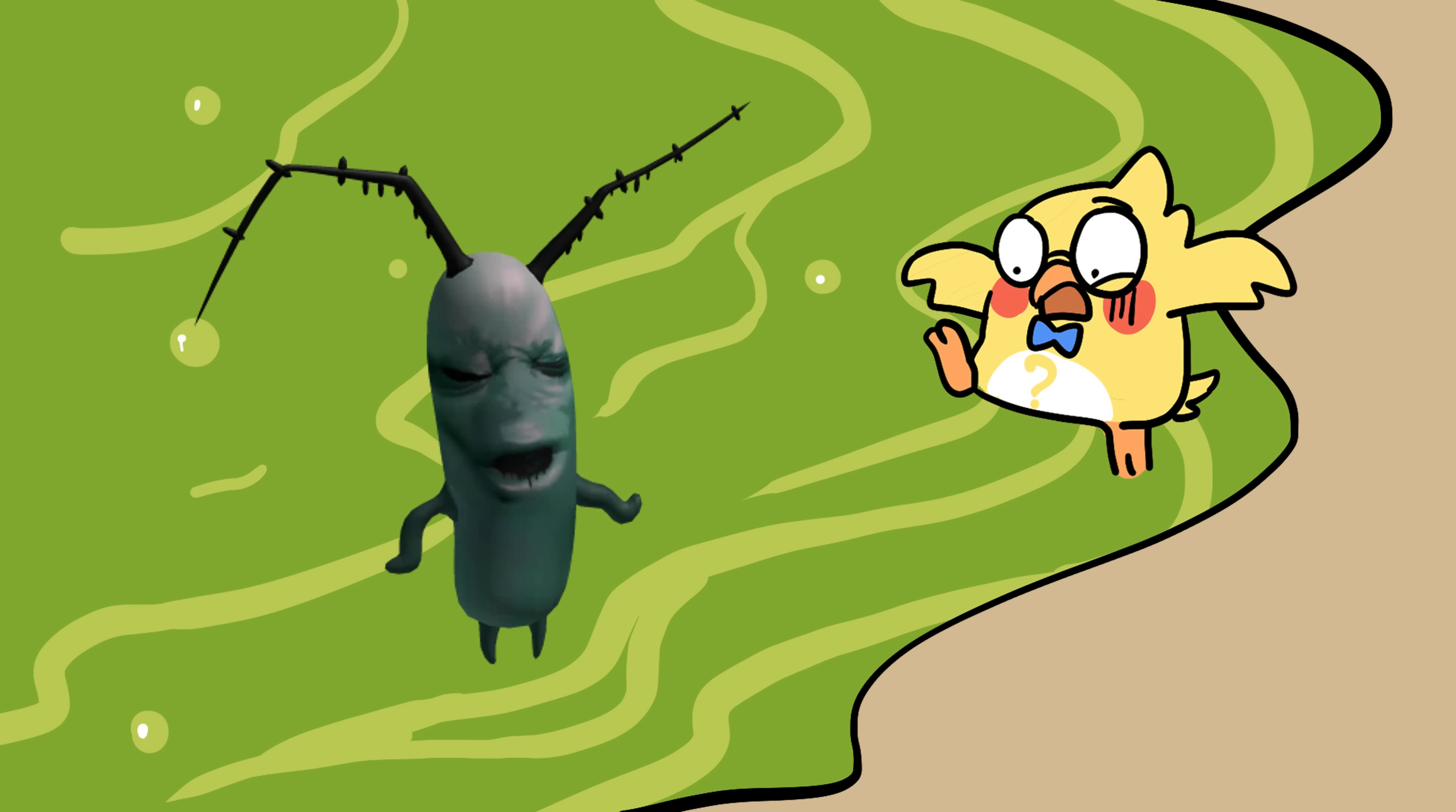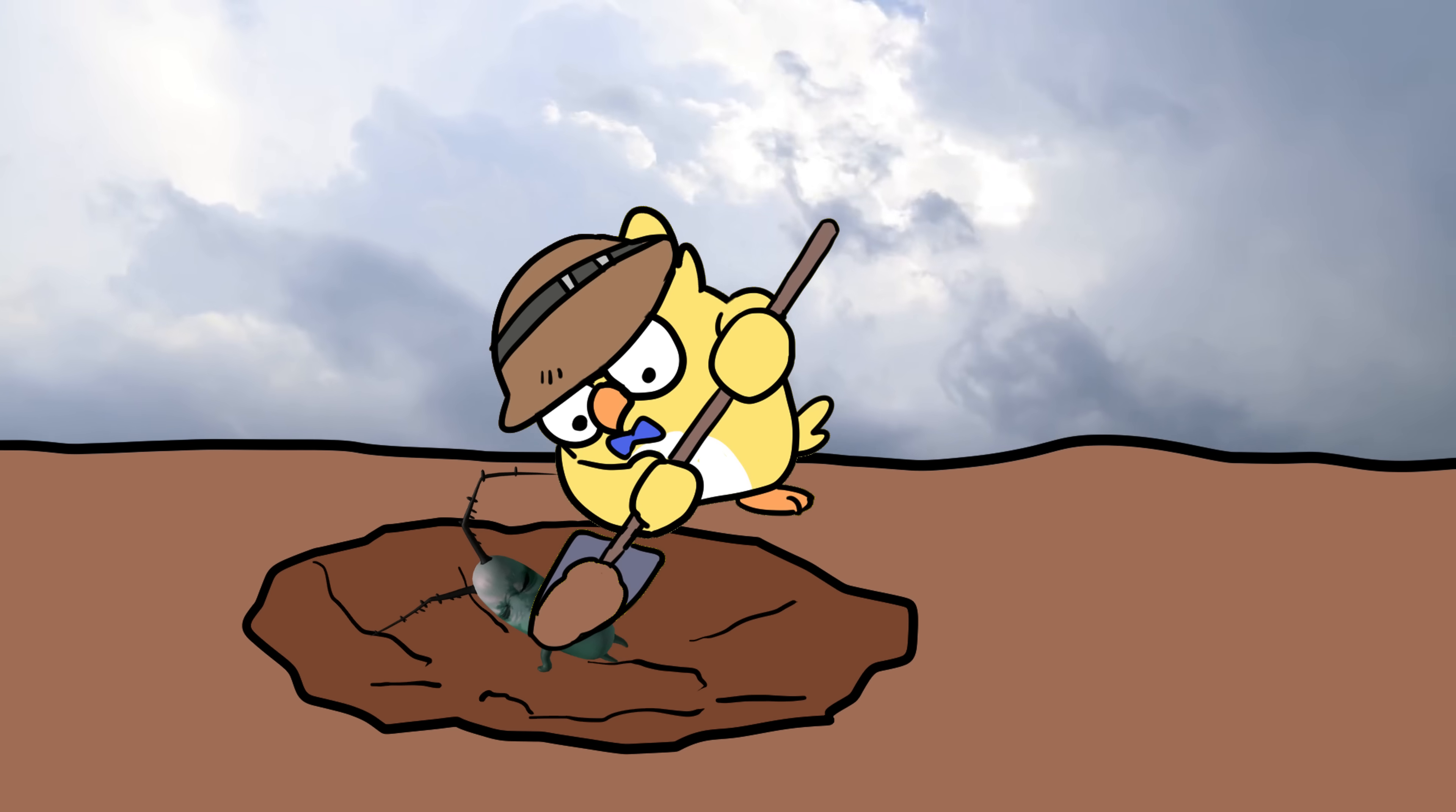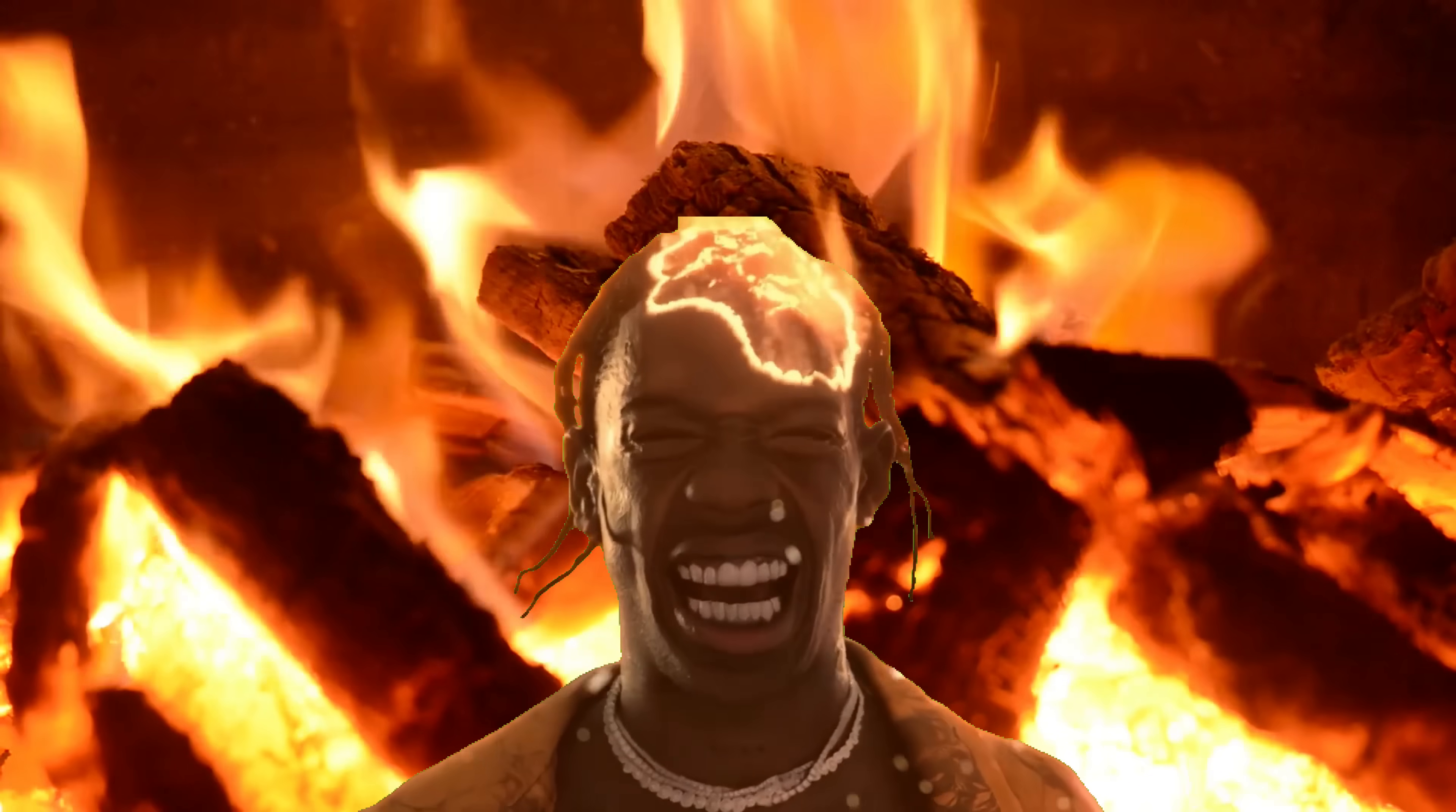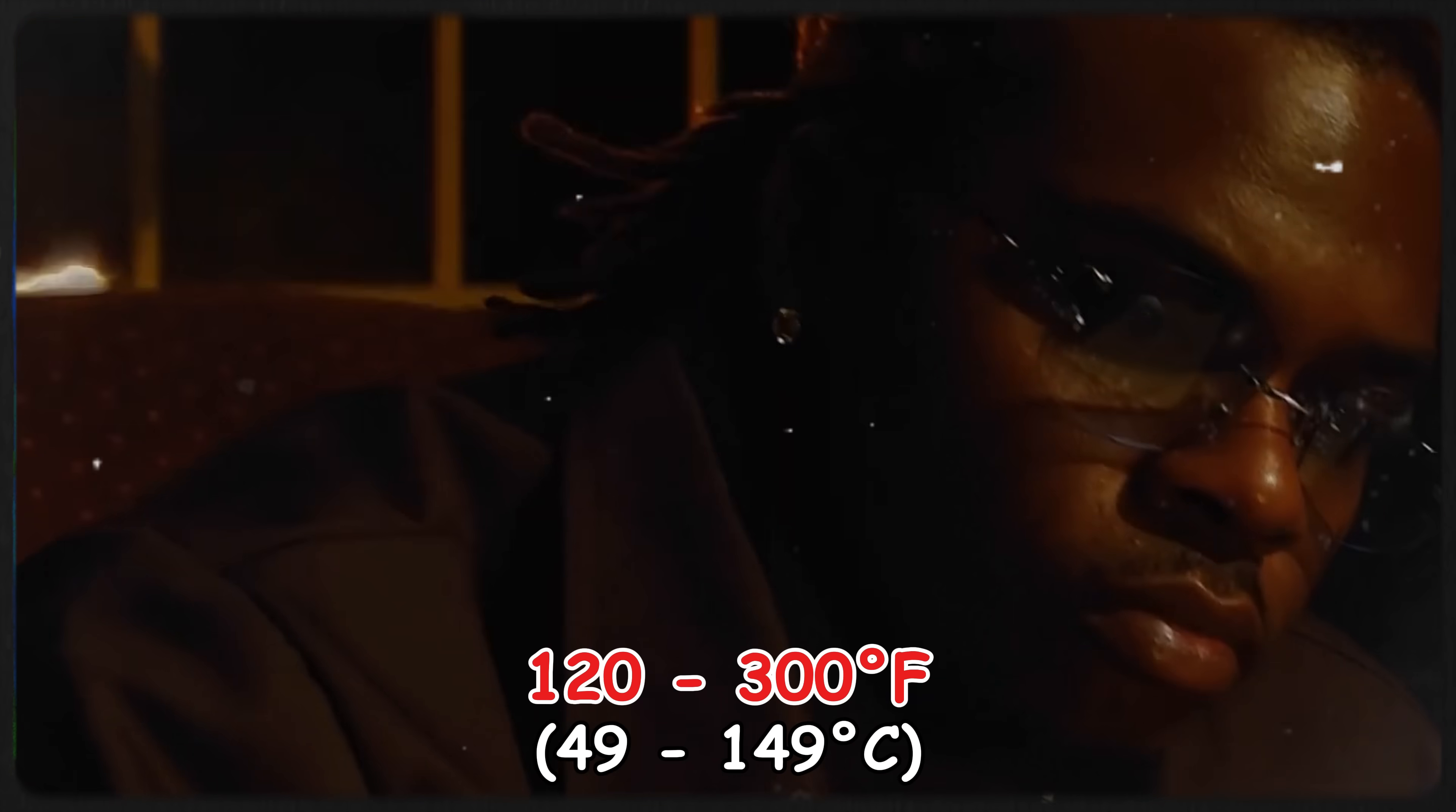Step 1: Start with dead plankton and algae. Billions of them. Step 2: Bury them under thick layers of sediment. No peaking. Step 3: Turn up the heat. Literally. Temperatures of 120 to 300 degrees Fahrenheit are ideal.